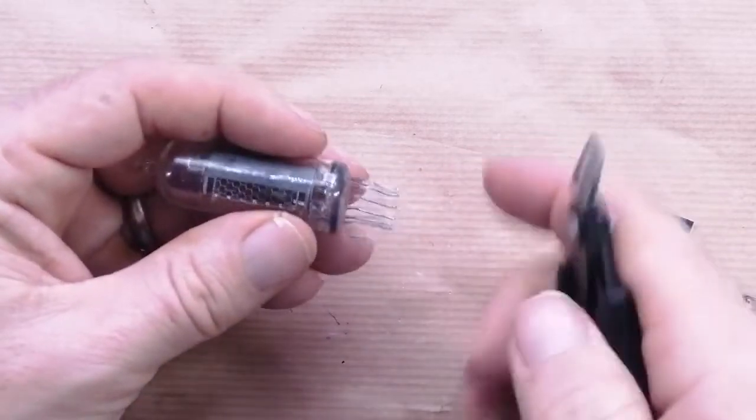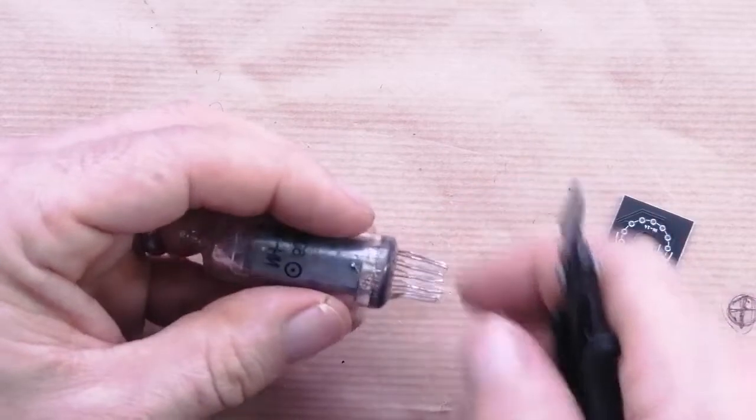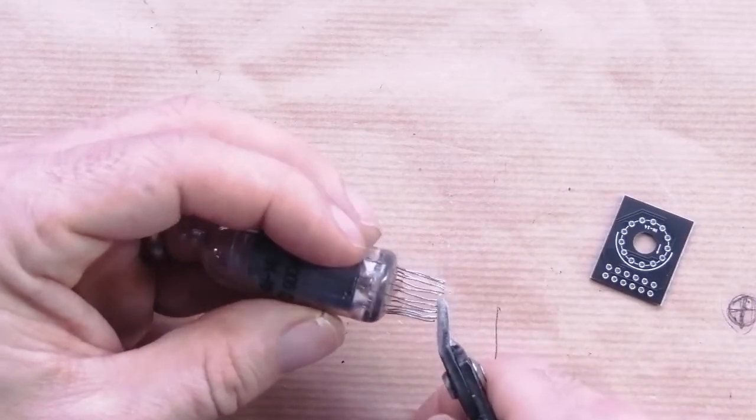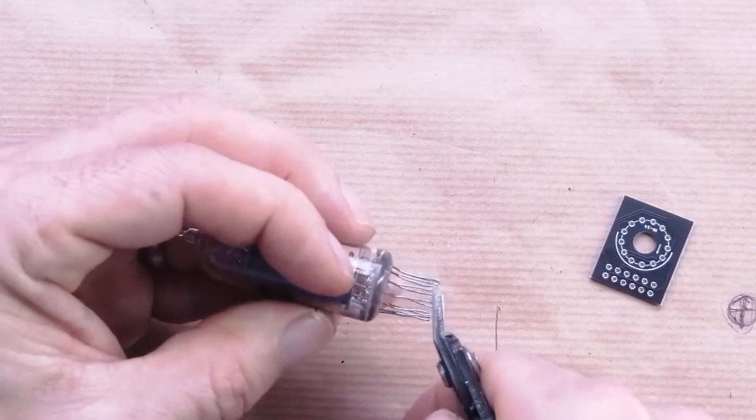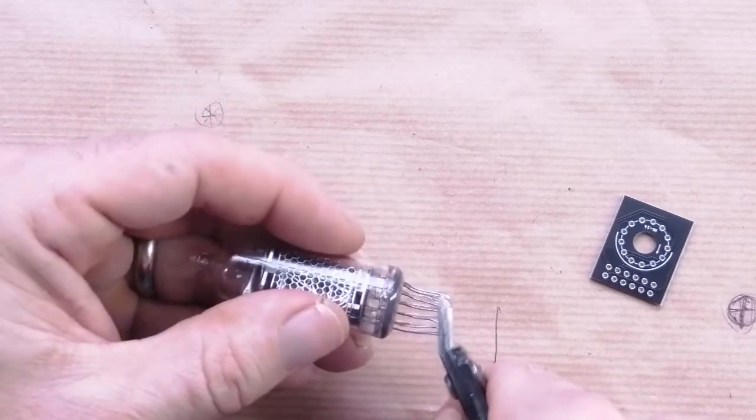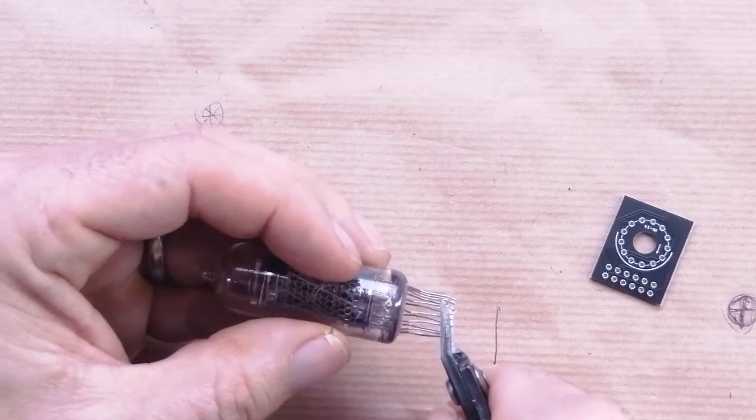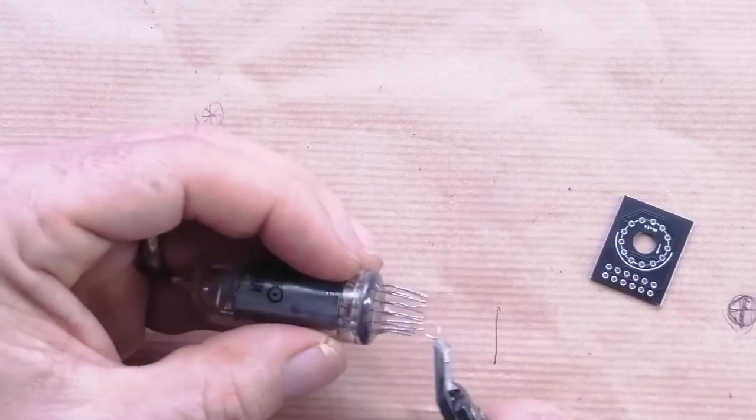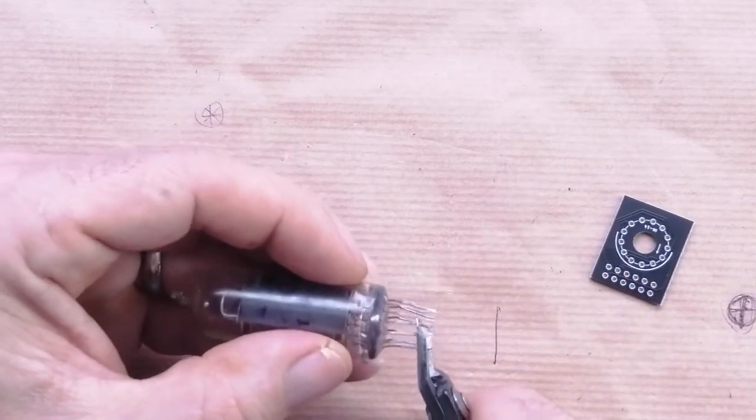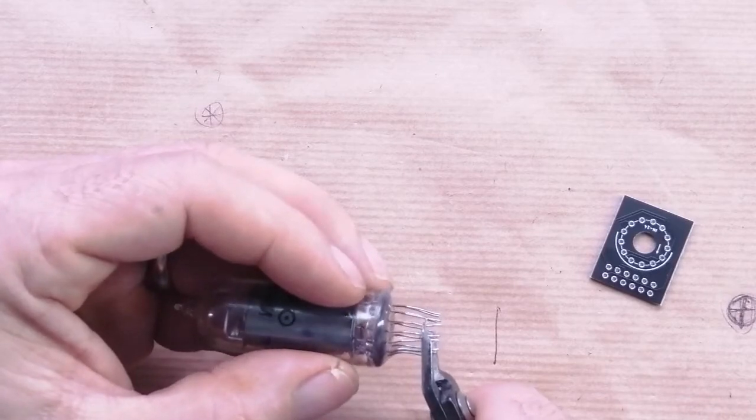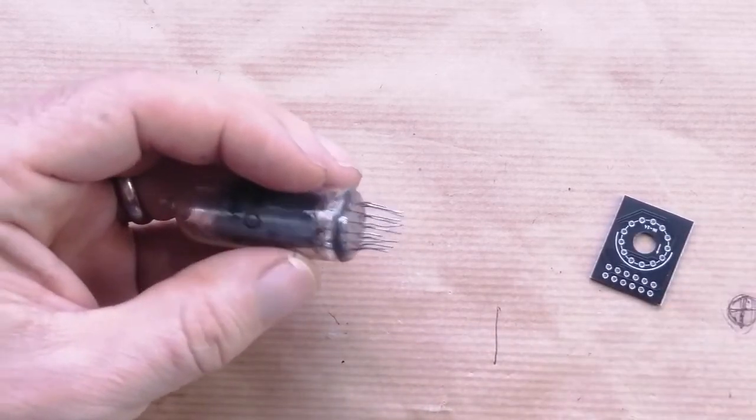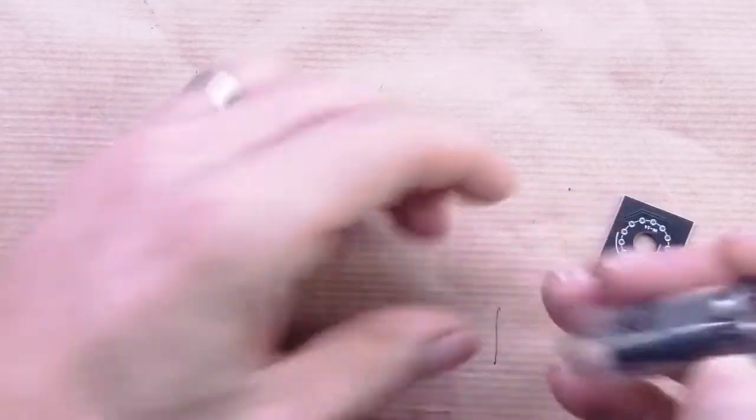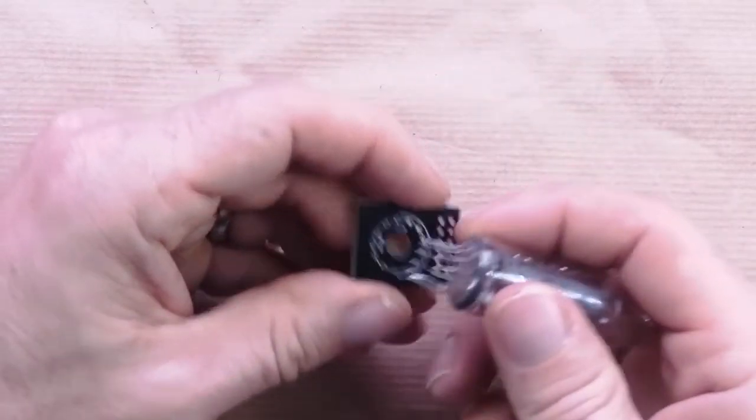And to do that what I'm going to do is a little trick that I like to do. I'm going to trim the wires in a spiral being careful not to go too wild with it, and leaving the wire where I started as the longest. You can see that they're in a spiral there and this makes it quite a lot easier to get them in.